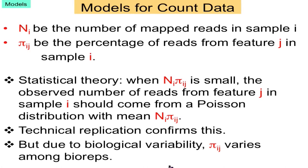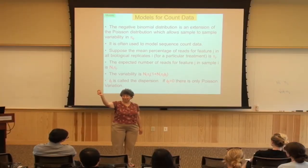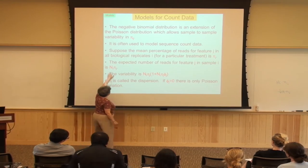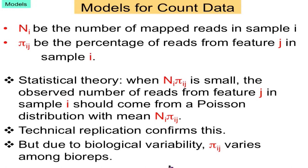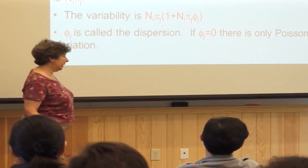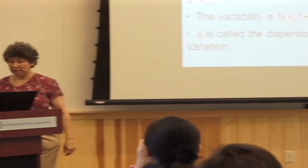We're going to assume the mean percentage of reads for feature j over all biological replicates is π_j. We find that counts are negative binomial with a specific mean and variance. The dispersion parameter φ: if φ is zero, the mean and variance are equal and you have Poisson data, which is much easier to deal with. If not, there's extra Poisson variation which you have to estimate. Each individual sample has its own true percentage π_ij, and we observe more dispersion in reads because they come from different individuals — that's where the negative binomial comes from.